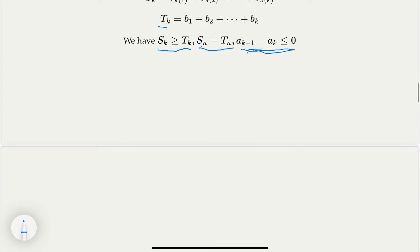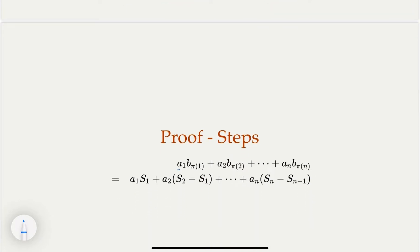With that, let's look at the permutated product sum here. We claim that each item here is actually the difference of S_2 minus S_1. This gives you b_{π(2)} here, and S_1 is b_{π(1)}, and so on and so forth.